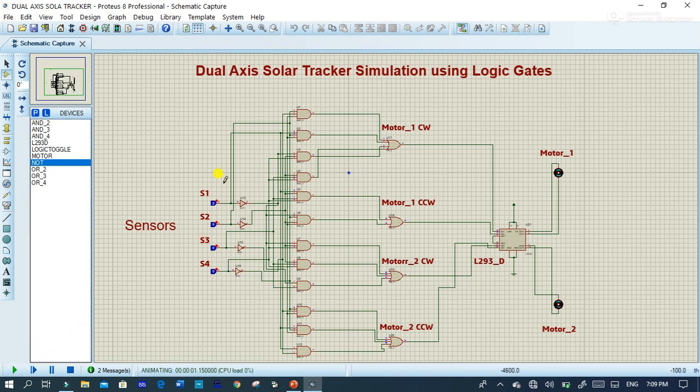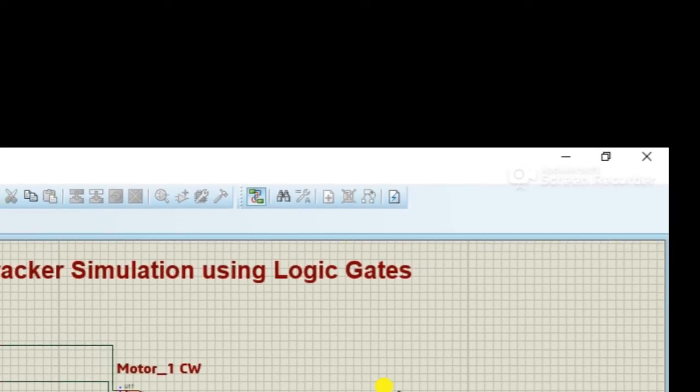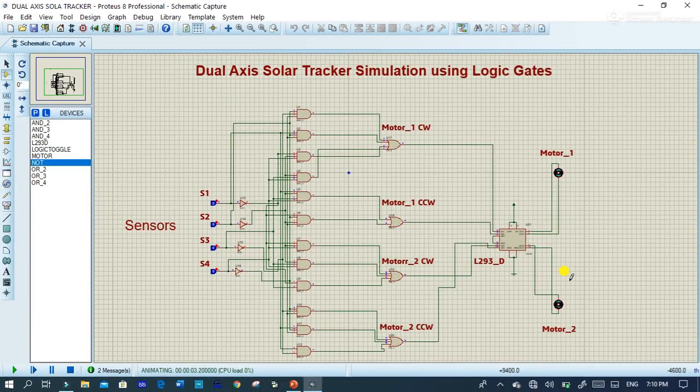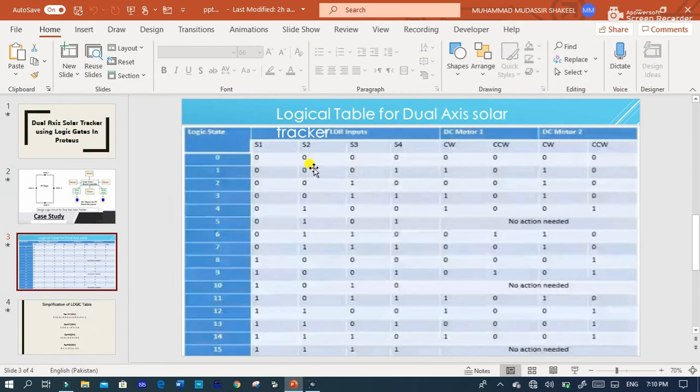And here you can see that when all the sensors have zero value then there is no rotation in motor 1 and motor 2. Let's verify the table. You can see that when all the sensors are deactivated there is no rotation.